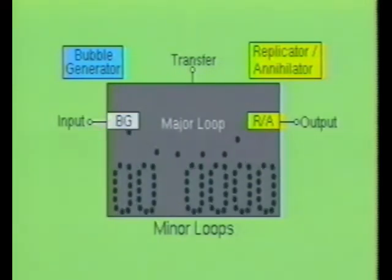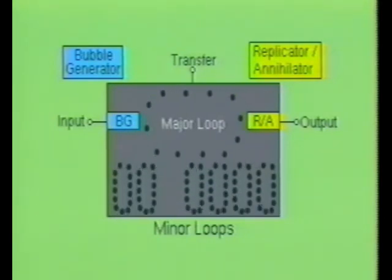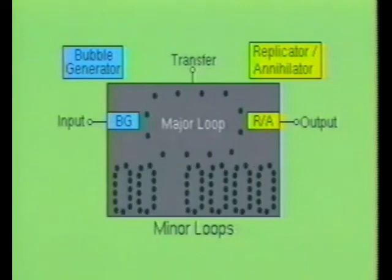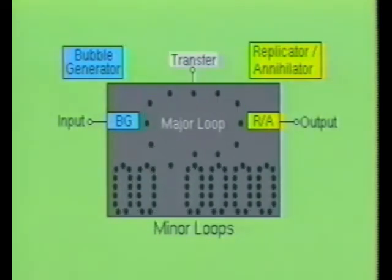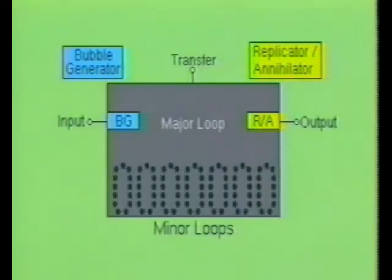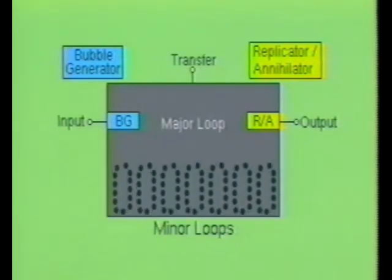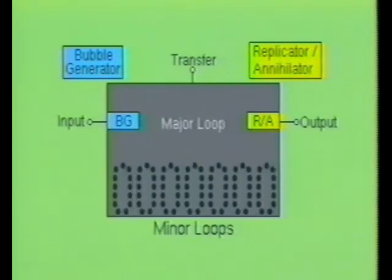To write information into the bubble device, the data is placed serially into the input pin. The input pin is connected to a special bubble generator structure contained within the IC. The bubbles are transferred in the major loop until the entire program has been loaded. At that time, the transfer input is activated, which causes special transfer gates to download the data from the major loop into a vacant minor loop area of the IC. The average data stored in a single minor loop is 640 bits.